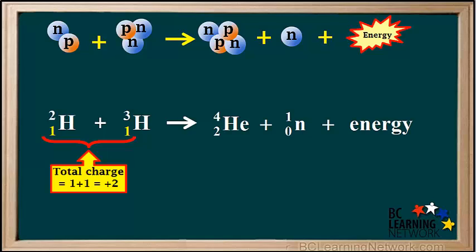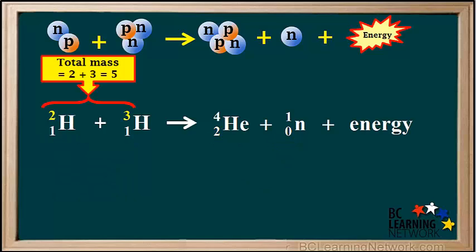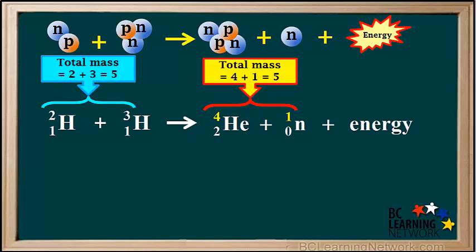This is also reflected in the equation. The total charge on the left is 1 plus 1, which is equal to positive 2. And the total charge on the right is 2 plus 0, which is also equal to positive 2. The total mass on the left is 2 plus 3, which is equal to 5. And the total mass on the right is 4 plus 1, which is also 5. So mass is conserved.